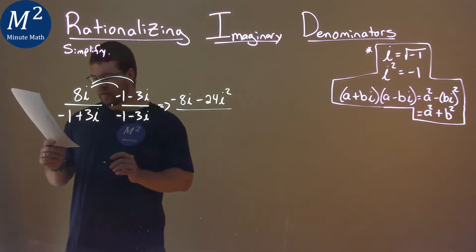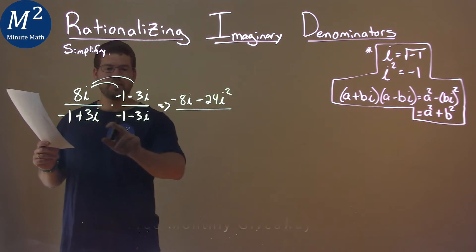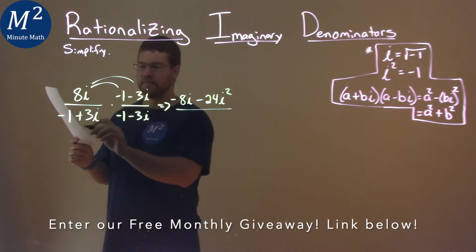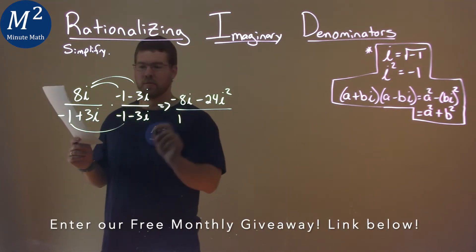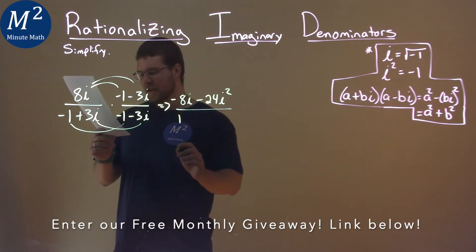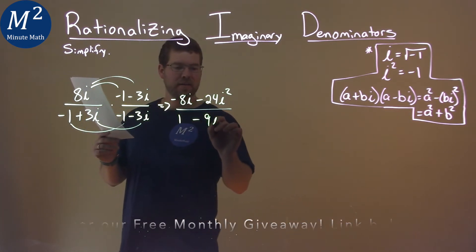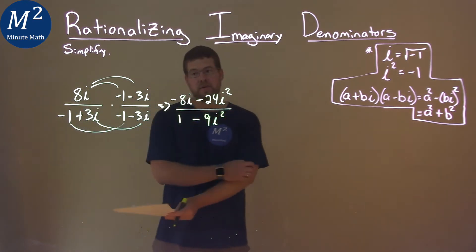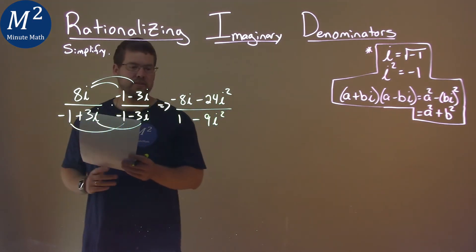For the denominator, same thing — we multiply the first terms: negative 1 times negative 1 is a positive 1. And 3i times negative 3i is negative 9i squared. And that's the beauty of multiplying by the conjugate — the other terms cancel each other out.